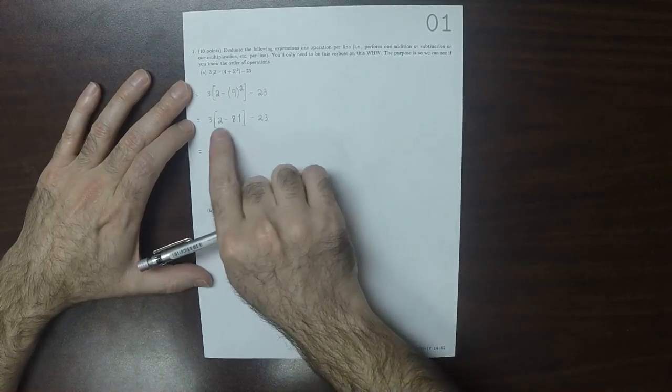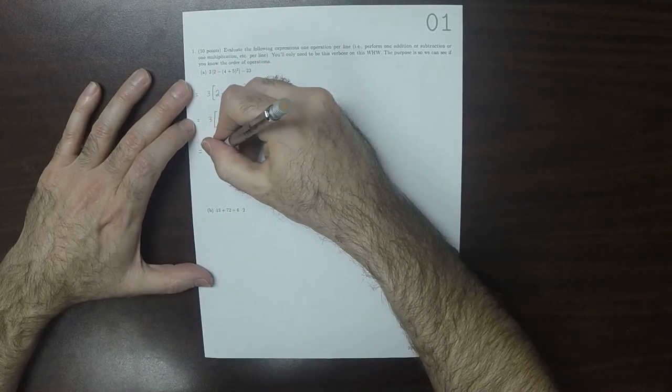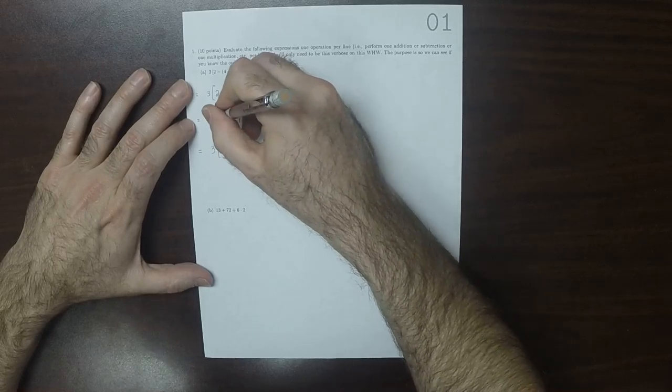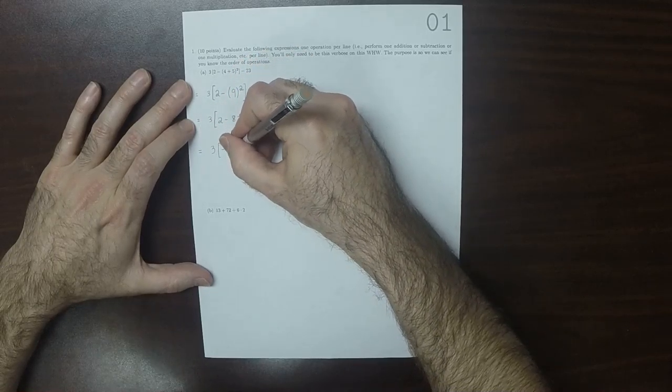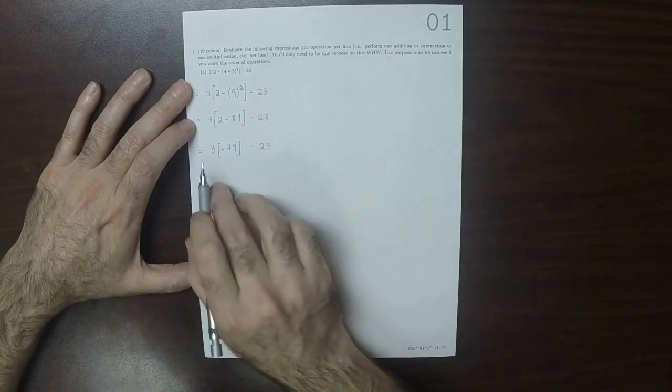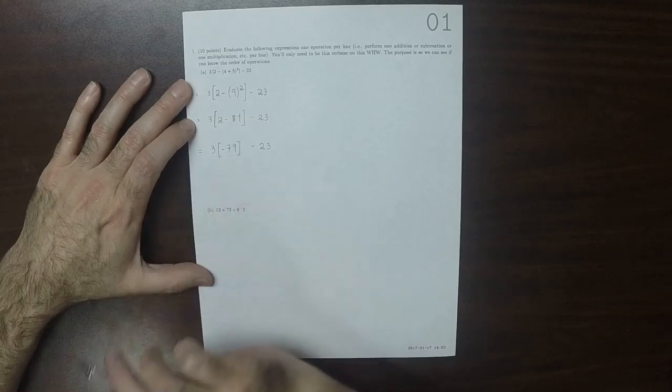So now these parentheses must be evaluated. So minus 2 minus 81 is negative 79 minus 23. Now that product needs to be evaluated.